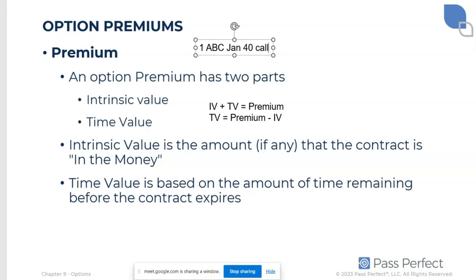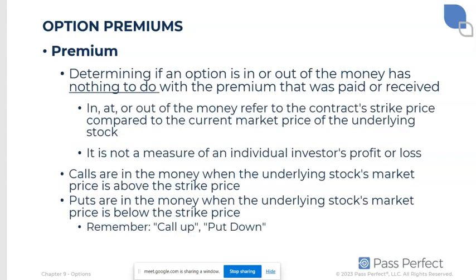Notice also that determining whether an option is in or out of the money has nothing to do with the premium that was paid. What they call the 'moneyness' of options — whether it's in the money, out of the money, or at the money — is an adjective that describes the option itself. Compare only strike price to market price. In and of itself, 'in the money' does not necessarily mean someone has a profit or a loss — it just describes the option. To figure out if somebody ends up with a profit or loss, that's when you factor in the premium they paid.